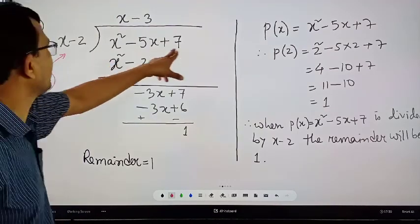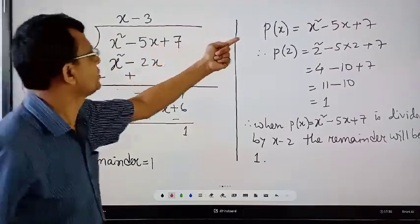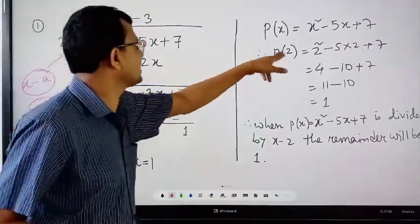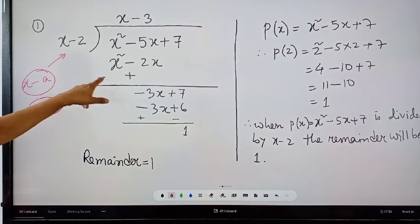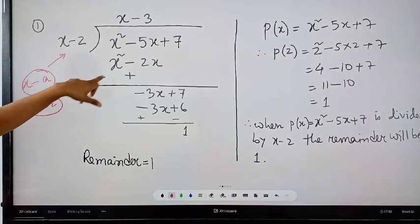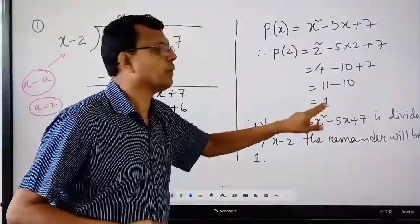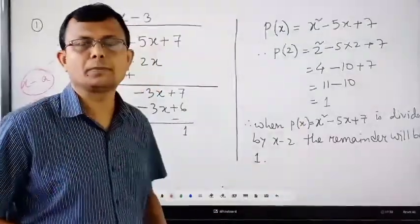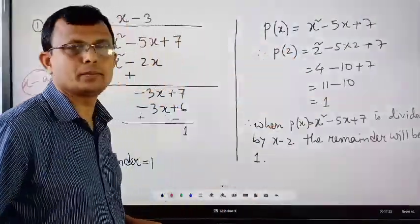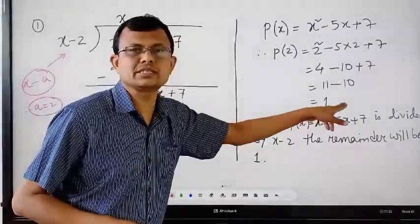If you put x equal to 2 in this polynomial p(x), which is x squared minus 5x plus 7, then p(2) gives the value 1. So this remainder is 1, and this value p(2) is also 1 — they are the same.